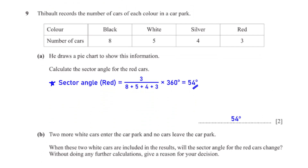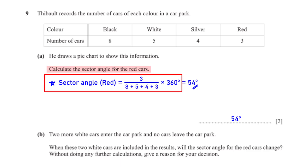Pebalt records the number of cars of each colour in a car park and draws a pie chart. Calculate the sector angle for the red cars. The sector angle equals the number of red cars (3) divided by the total number of cars (8 + 5 + 4 + 3), times 360 degrees. This gives us 54 degrees.